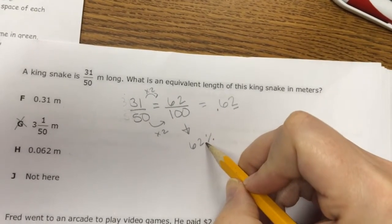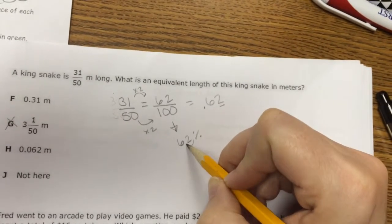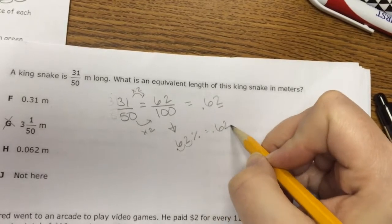Or 62 hundredths is 62%, and then I move my decimal going percent to decimal, 1, 2, and that gives me 0.62.